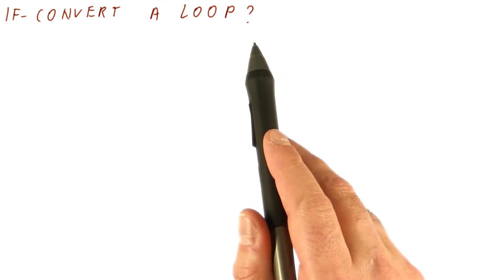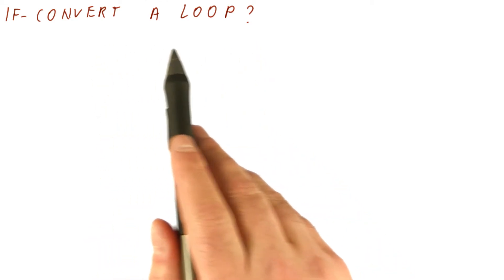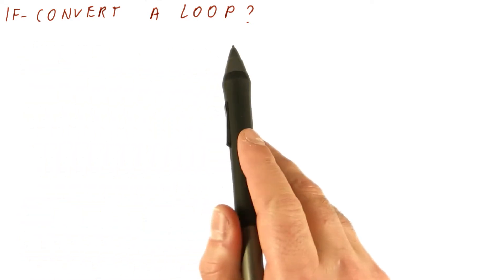We have seen that we can if-convert if-then-elses. A similar technique would be very useful for a loop, but can we really if-convert a loop?